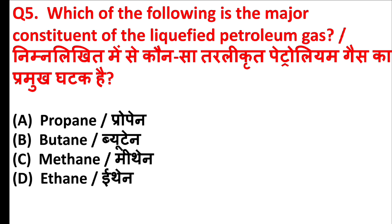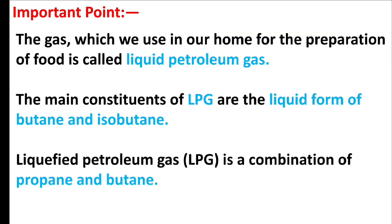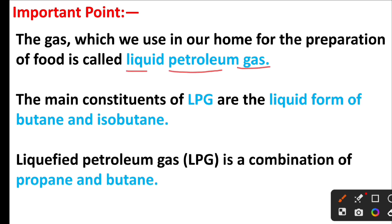Which of the following is the major constituent of liquefied petroleum gas? The right answer is option B: Butane. Friends, the gas which we use in our home for the preparation of food is called liquid petroleum gas. The main constituents of LPG are the liquid form of butane and isobutane. Liquefied petroleum gas is a combination of propane and butane.